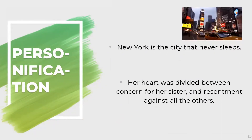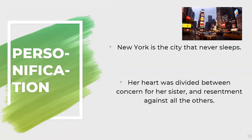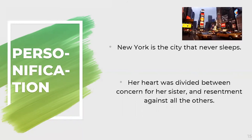An example of personification: 'New York is a city that never sleeps.' The city cannot literally sleep or be awake like a human, but this phrase conveys that New York is a lively and energetic city day or night. Another example: 'Her heart was divided between concern for her sister and resentment against all the others.' It is not the heart that feels divided — it is the person — but the heart is given a human emotion.